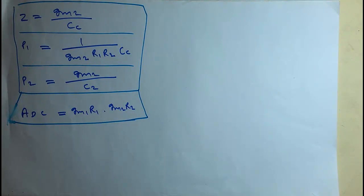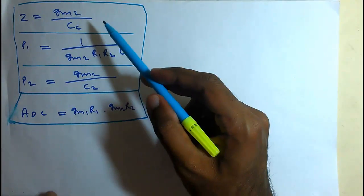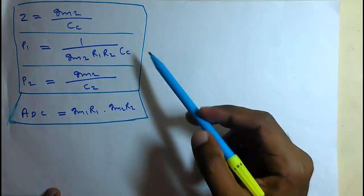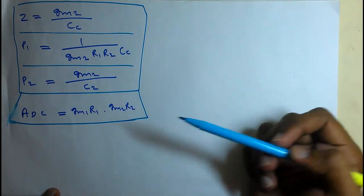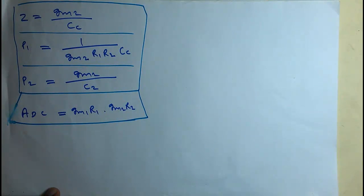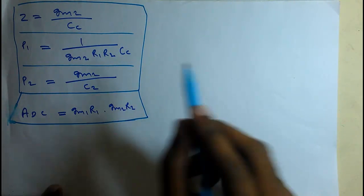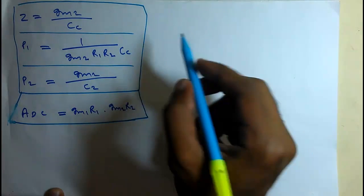In the last video, we designed the zero, the first pole, the second pole, and the DC gain. So before moving to the design in Cadence, we have two more things to derive. The first thing is gain bandwidth product.